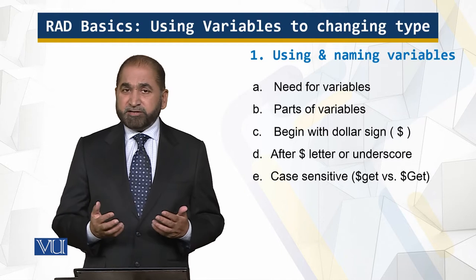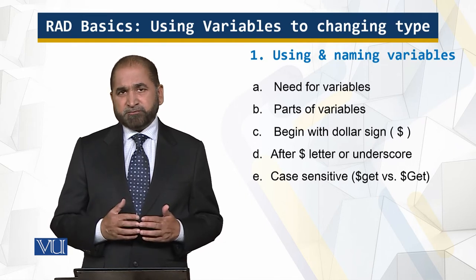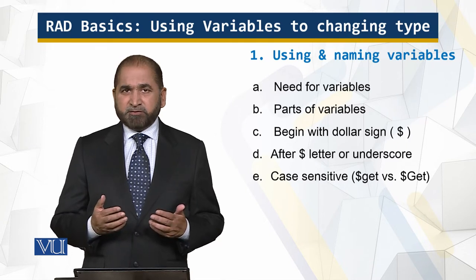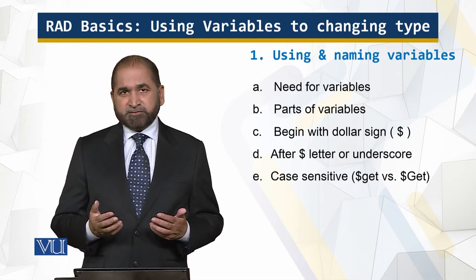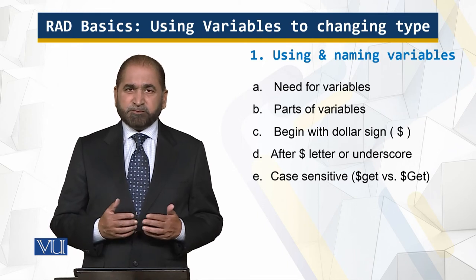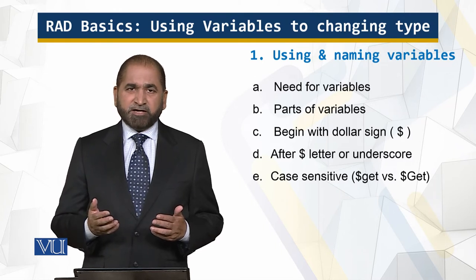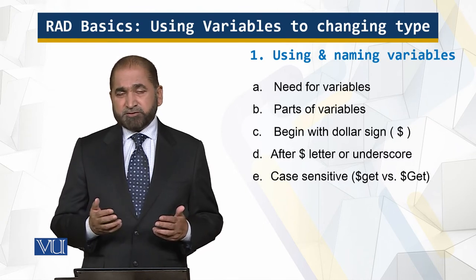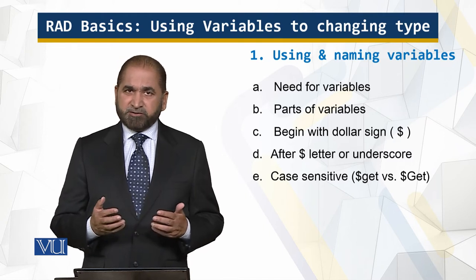So why do we need variables? A variable is a container of a value, as you may already know. Since the contents of that container can vary over a period of time and can change because of different operations, they are called variables. For example, if you just print or echo 2 plus 2 and then you would like to change the values, you may have to make those changes at many places. Variables help you facilitate and make those changes at only a single place.